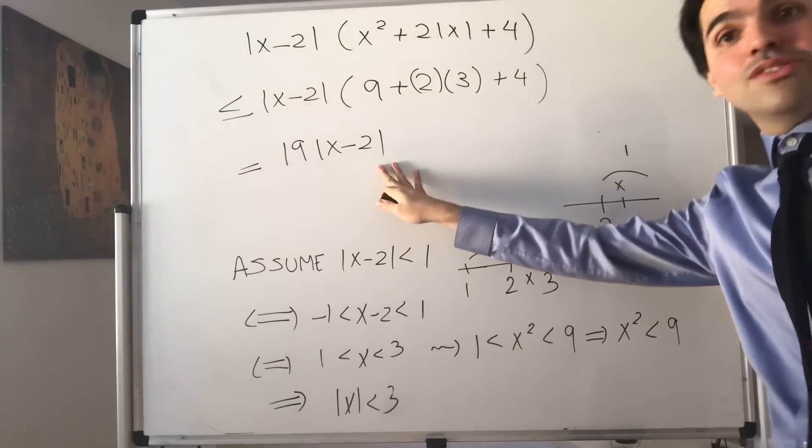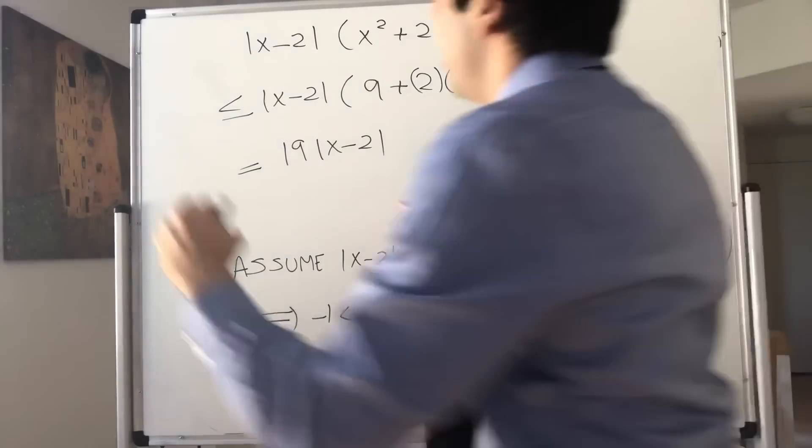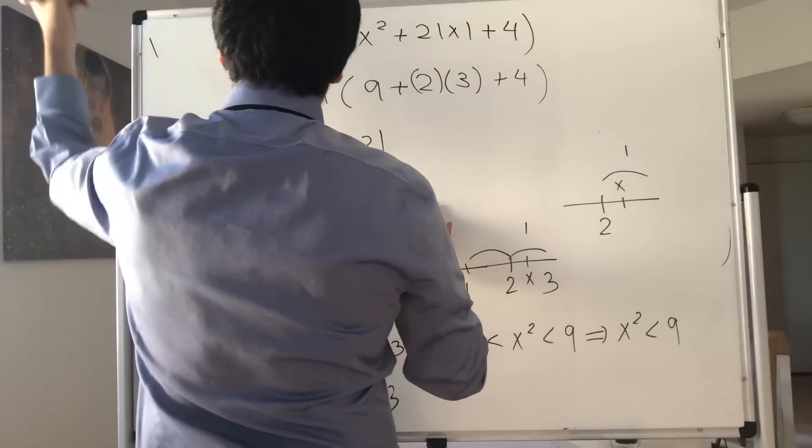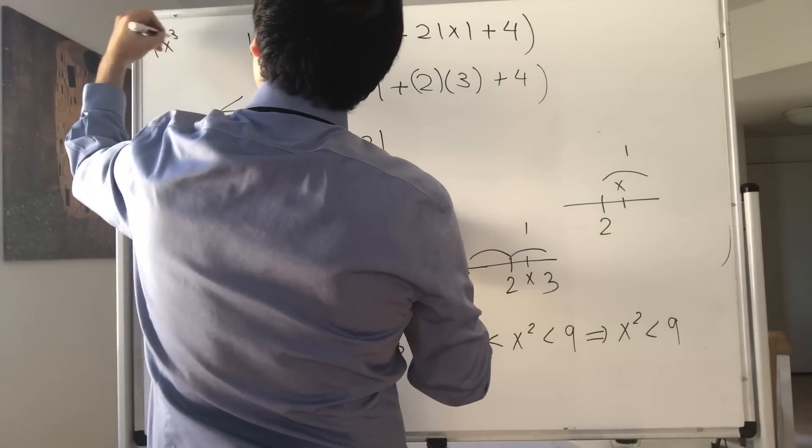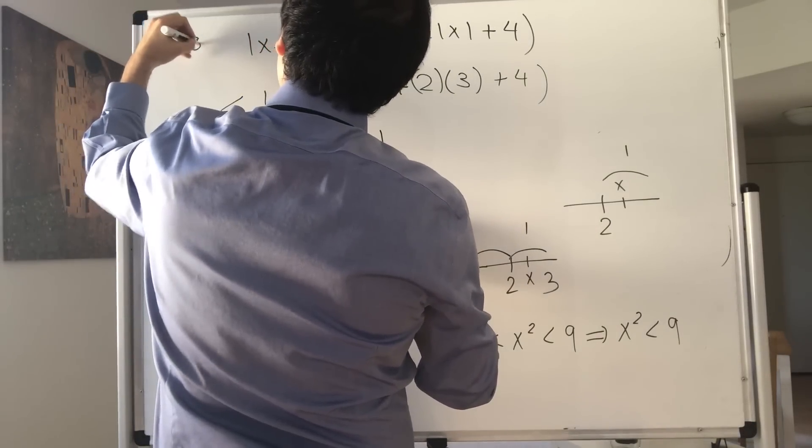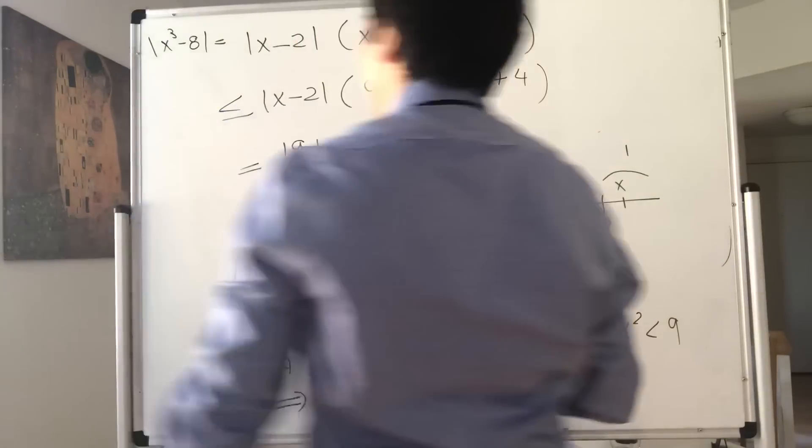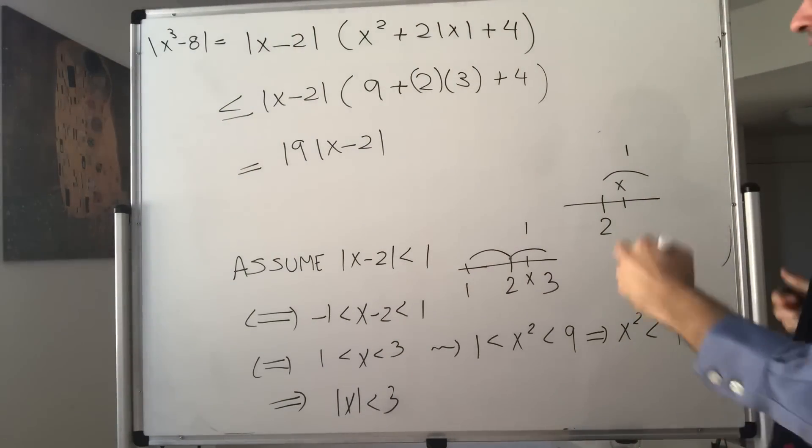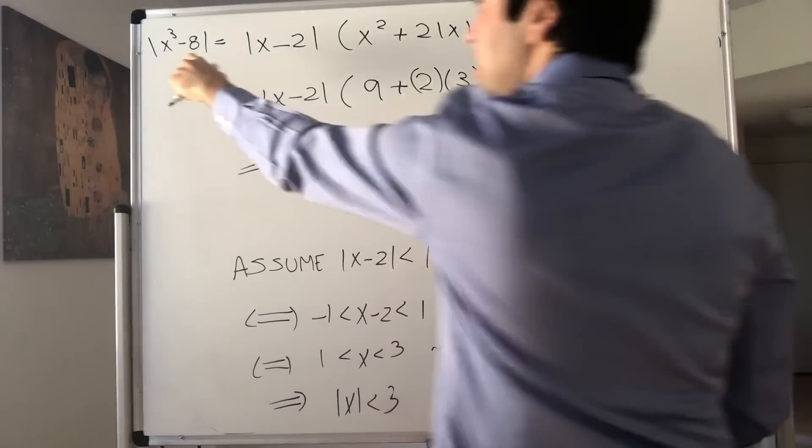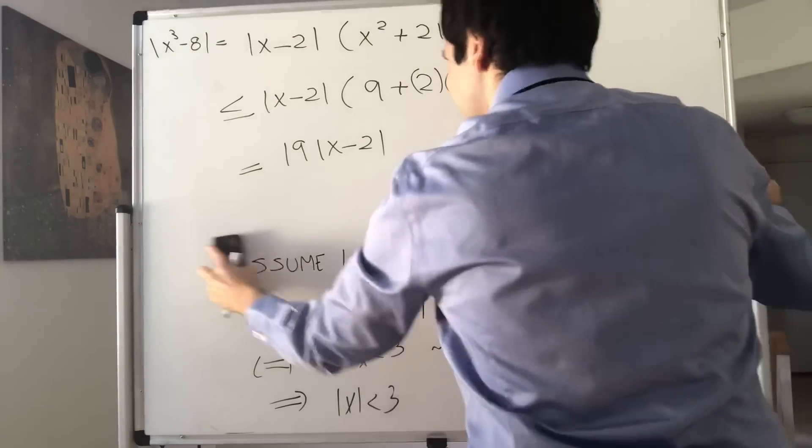If you're still watching, good for you. What is equal to x cubed minus 8? Well, it's less than or equal to 19 times x minus 2. And remember, we want this to be less than epsilon.